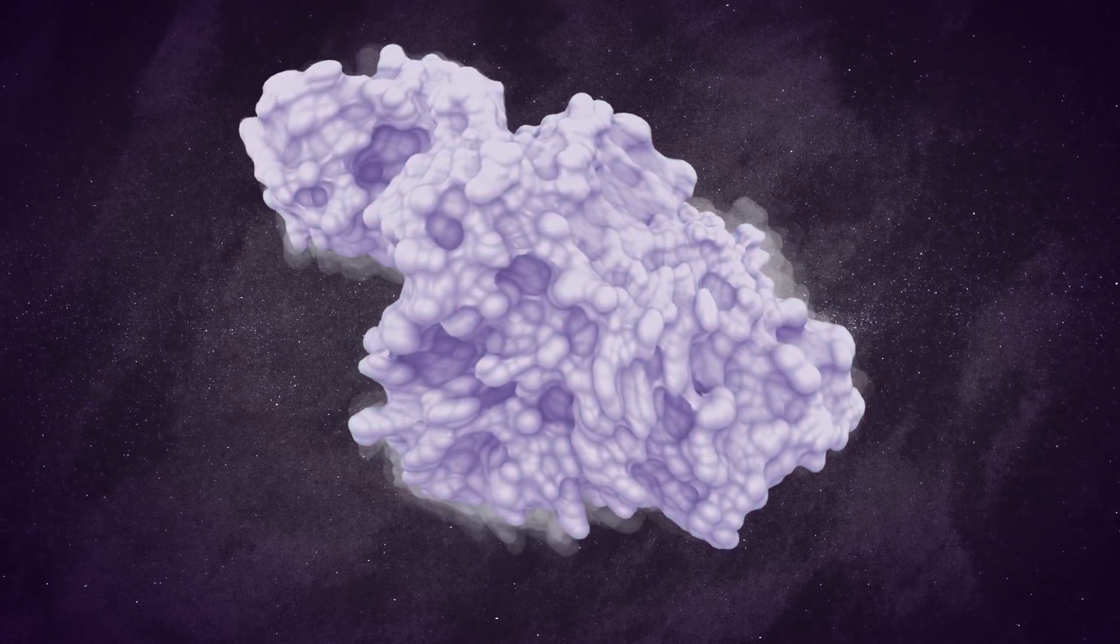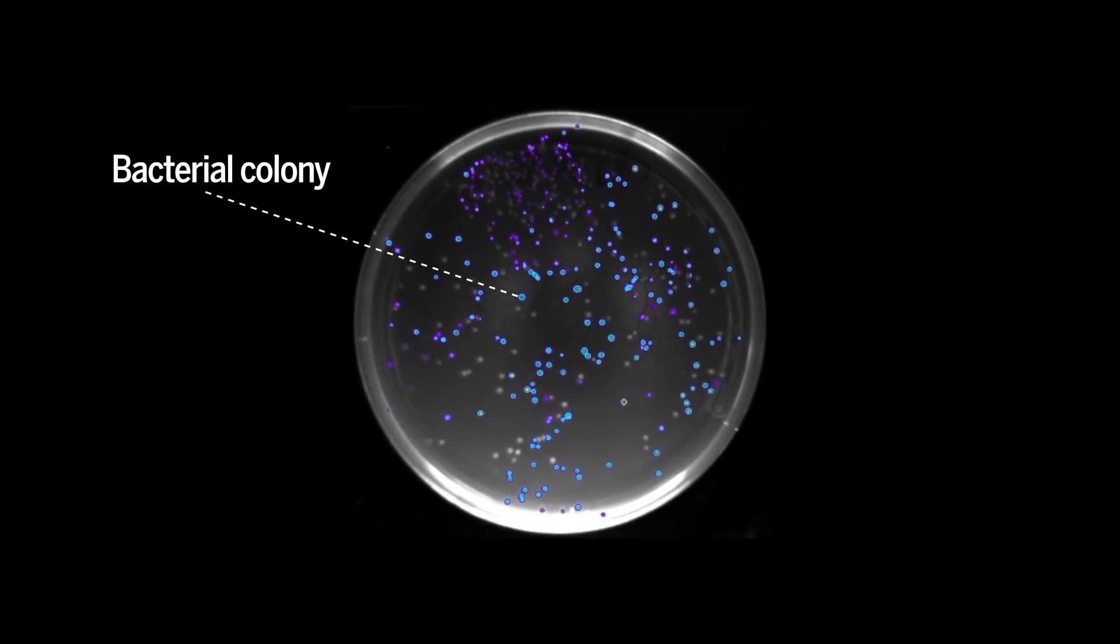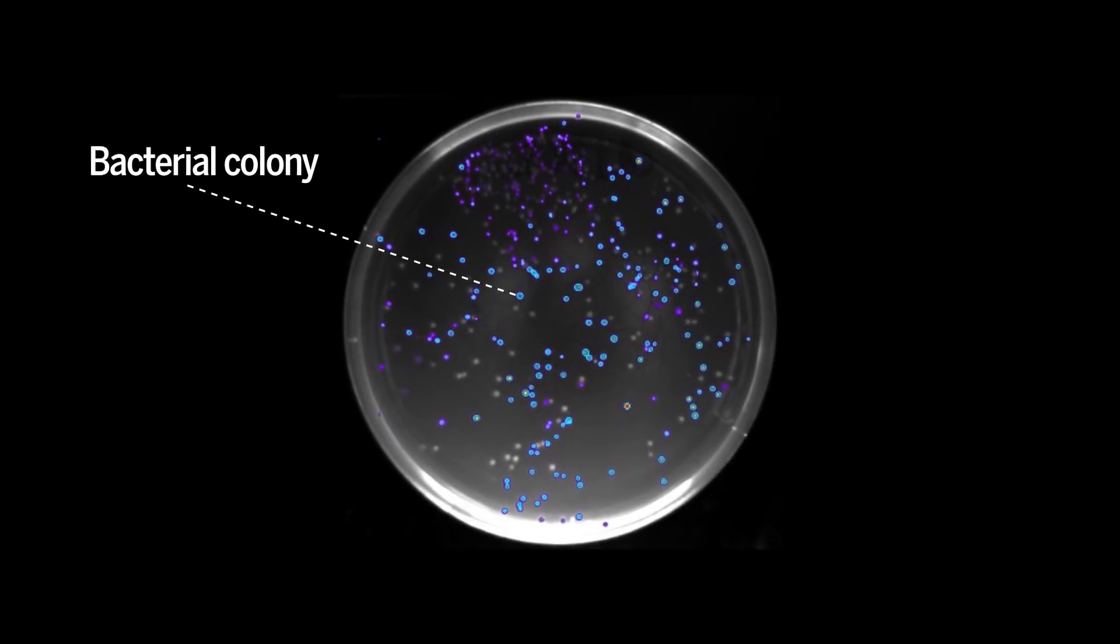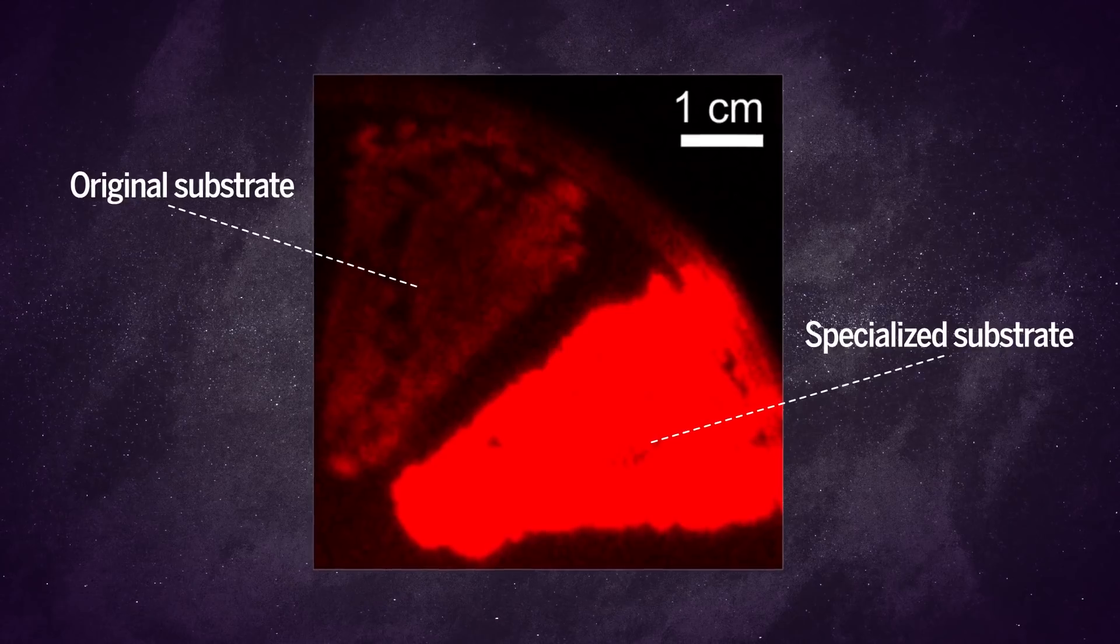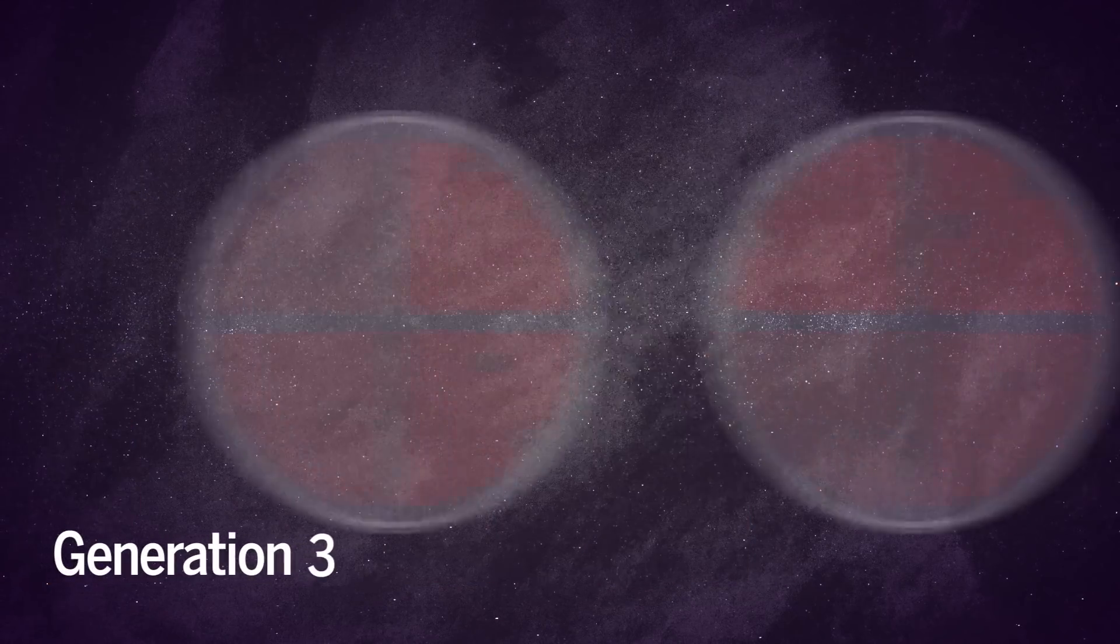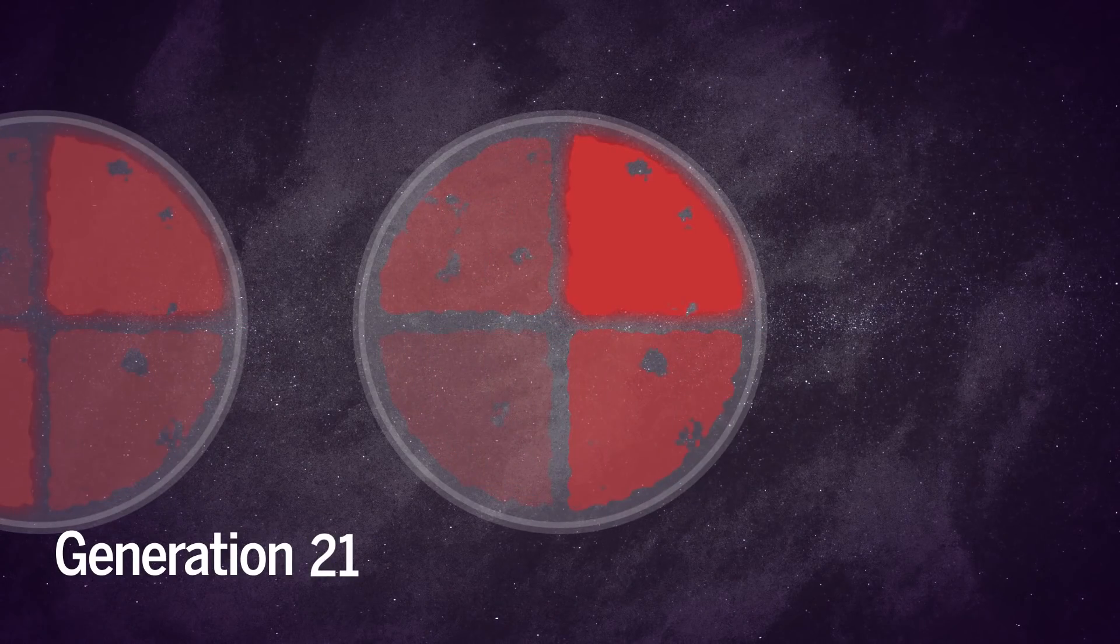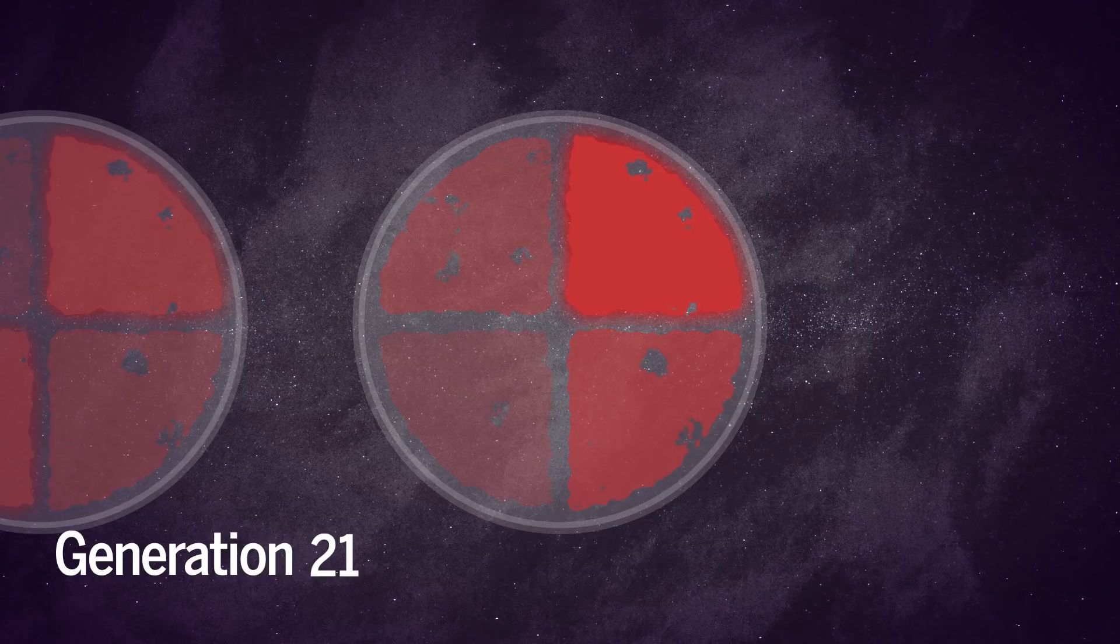They introduced randomly mutated versions of the enzyme into bacteria, then sprayed the bacterial colonies with a specialized substrate. The colonies that glowed the brightest were selected and mutated again. Twenty-one generations later, the optimized enzyme-substrate pair glowed much brighter and was less toxic to cells.